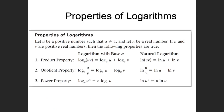Here are the properties of logarithms. If you have two logs with a plus sign in between and they have the same base, you rewrite it as a single logarithm and multiply: log base a of (u times v). If it's a minus sign in between, you rewrite it as a single log with u divided by v. And if there's an exponent, you can bring that exponent out front.